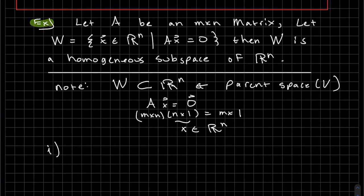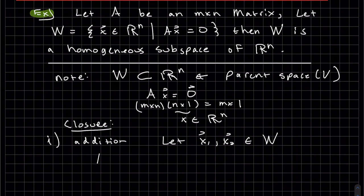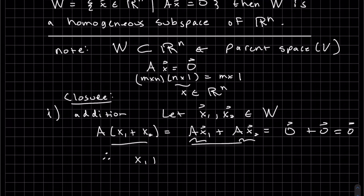Let's start with the first one, addition. Let two elements X1, X2 be in W. Let's look at the addition. We can distribute using properties of matrices. We know this is 0, and we know this is 0. Therefore, the sum is 0. Therefore, X1 plus X2 is an element of W. Therefore, it's closed under addition.